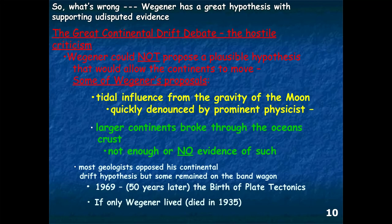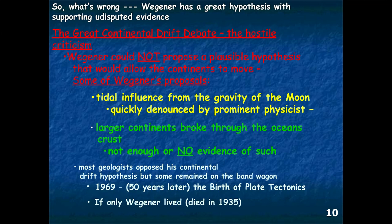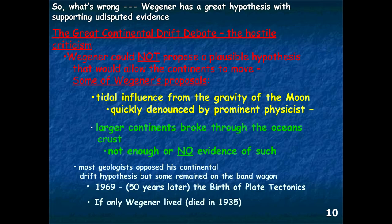By the late 1920s, most geologists and scientists opposed the hypothesis of continental drift, and Alfred Wegener was ostracized from the science world—known as the laughingstock. It really wasn't until the late 1960s, about 50 years later, that the birth of plate tectonics took hold. Unfortunately, Alfred Wegener died in 1935, so he wasn't there to see his hypothesis evolve into plate tectonic theory. Over the next few slides, we'll look at more evidence leading up to the late 1960s and the defining evidence that separates continental drift from the plate tectonics theory.